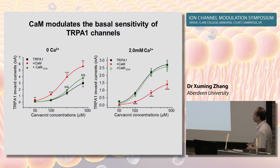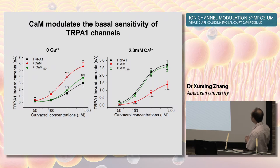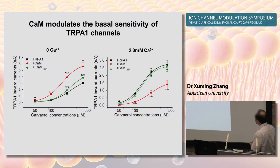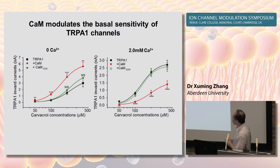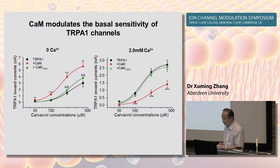We then performed a similar experiment at 2 mM calcium. In this case, over-expression of calmodulin inhibited the sensitivity of the channel, seen as a marked rightward shift of the curve. Again, this inhibitory effect of calmodulin was abolished by the calmodulin calcium-binding mutant. This experiment demonstrates that calmodulin promotes TRPA1 activation at low calcium but inhibits the channel at high calcium, consistent with the dual role of calcium in modulating TRPA1 channels.